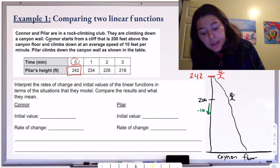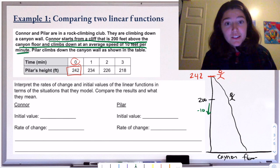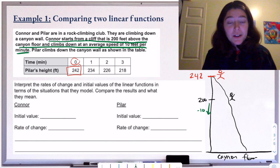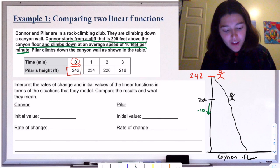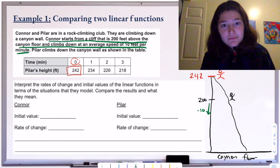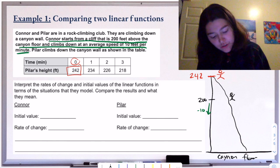Connor's function is represented verbally — we're told his information in words. Pilar's is represented numerically in a table. They're both linear functions, so we're going to find the initial value, the rate of change, and discuss what they mean. For Connor, the initial value is where he's starting. How many feet above the canyon floor is Connor when zero minutes have passed? That's 200 feet.